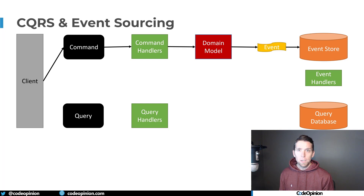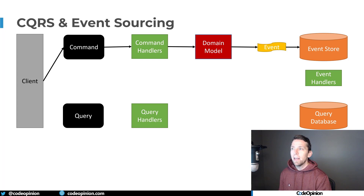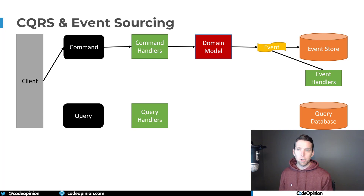Before we get to the query side, let's talk about projections. Once we publish or save our event to our event store, we can have that event published to event handlers. These event handlers are what create a projection. We could have many different handlers creating many different projections — basically denormalizing or taking that event and recording it in a separate database, which could be a document store or a relational database, separate from our event store, where we keep track of current state.